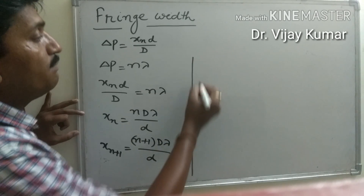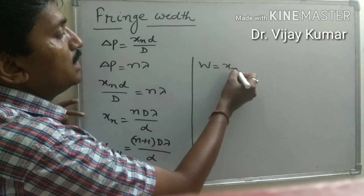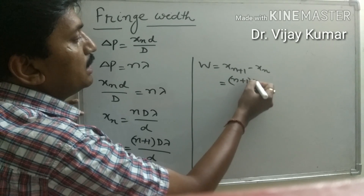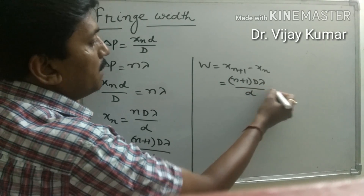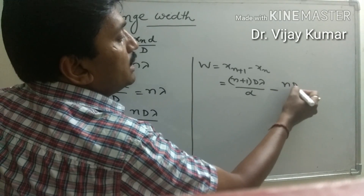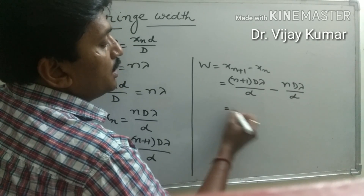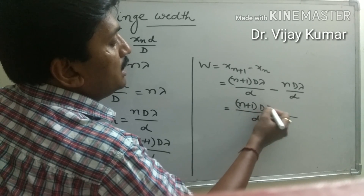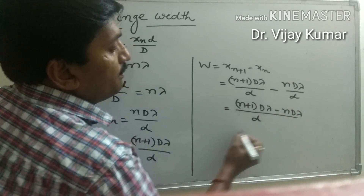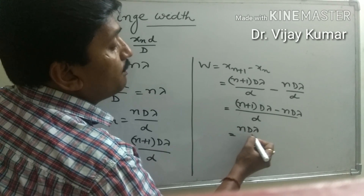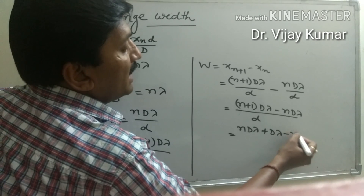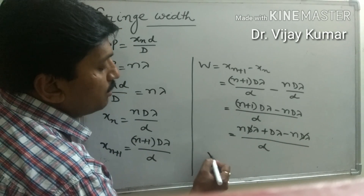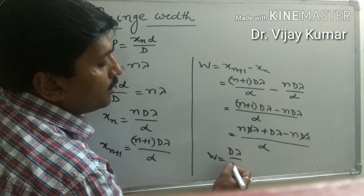Now we want to determine the fringe width of bright fringes. It should be x(n+1) minus xn, which equals (n+1)·D·lambda upon d minus n·D·lambda upon d. Expanding: n·D·lambda plus D·lambda minus n·D·lambda, all upon d. The n·D·lambda terms cancel out, and W becomes D·lambda upon d.